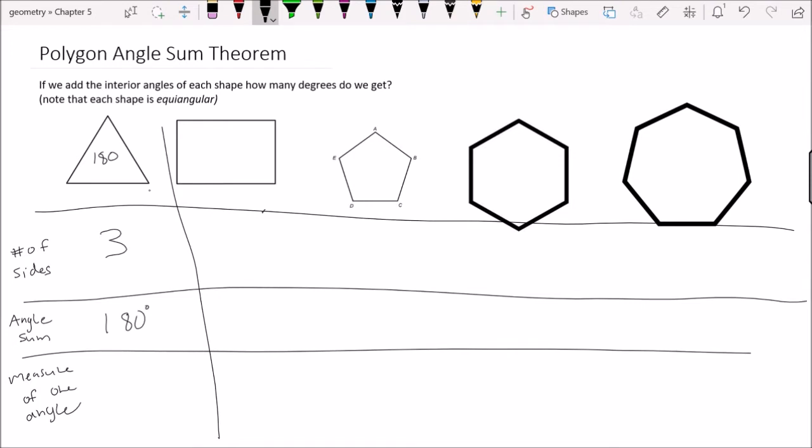And then a measure of one angle, all we would do is 180 divided by three, and it's equilateral. So it is 60. Okay, so not too bad. That's not new. Let's go to the next shape.